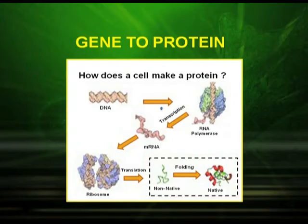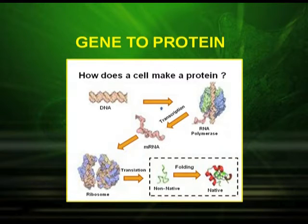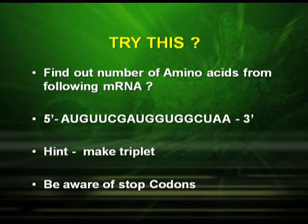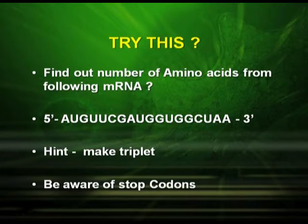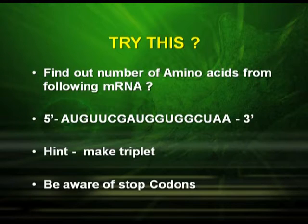Now we have a concept of how we go from gene to protein. This diagram shows how a cell makes a protein — from replication to transcription to translation: DNA forms RNA with the help of RNA polymerase, then ultimately forms a protein with amino acids as building blocks. Here is a practice question: find the number of amino acids from the following mRNA template — AUG, UUC, GAU, GGU, GGC, UAA — with polarity 5 prime to 3 prime. Make triplets, be aware of stop codons, and find the number of amino acids.